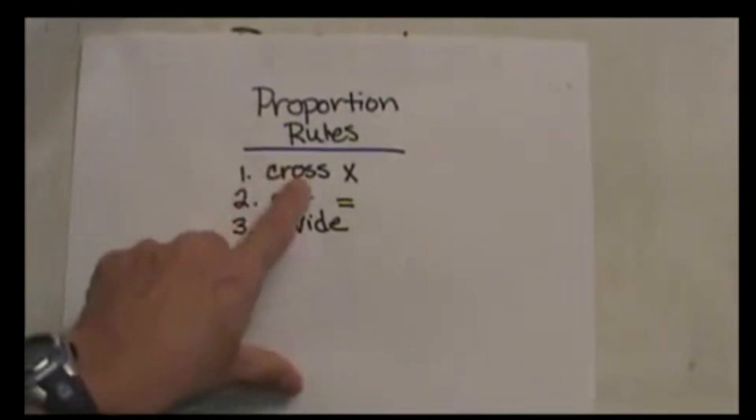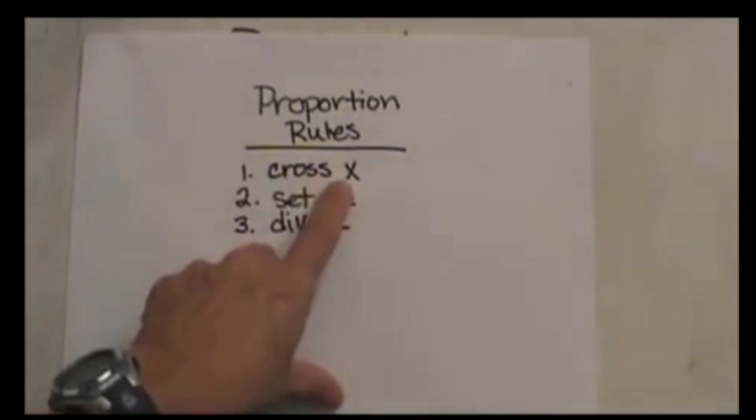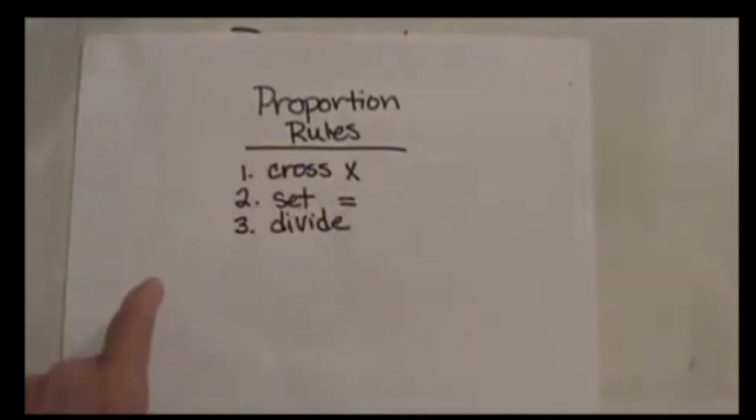First we're going to do a cross multiplication. You take the bottom of one fraction and multiply it times the top of the other. Then you set those two equal to each other.